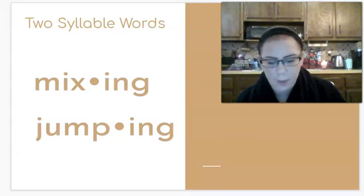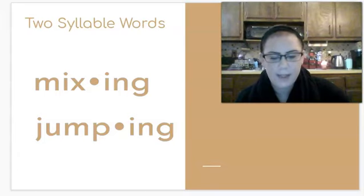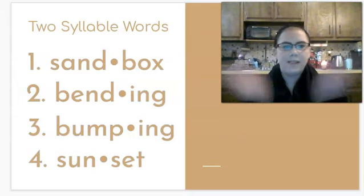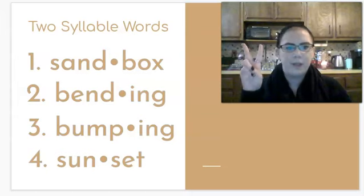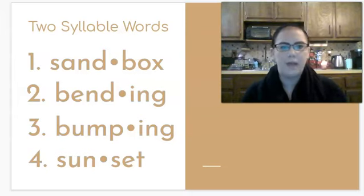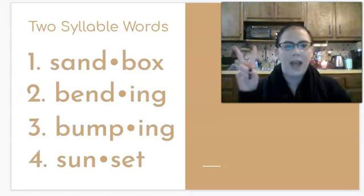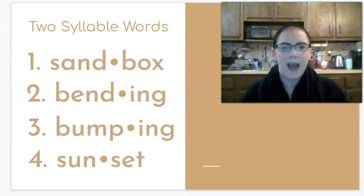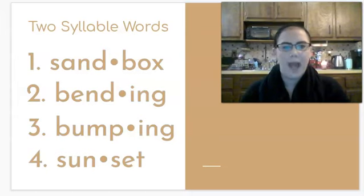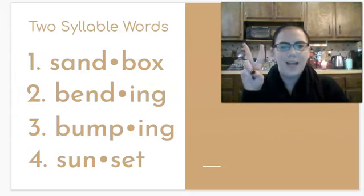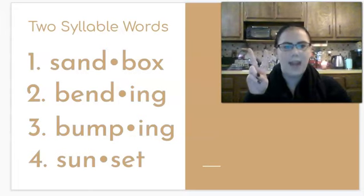Let's look at some more examples and clap them out to see how many syllables they have. Number one: standing — two syllables. Number two: bending — two syllables. Now sandbox is a compound word; it has two words, but bending is not. Number three: bumping — bumping has two syllables but it's not a compound word. Number four: sunset — two syllables and it is a compound word. Sun is a word and set is a word.